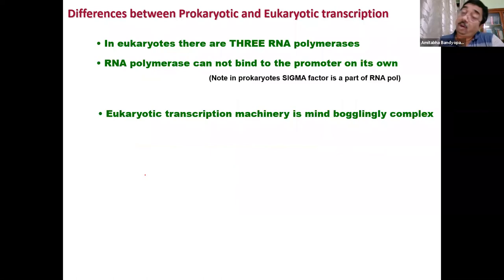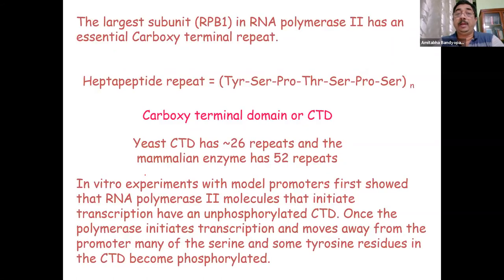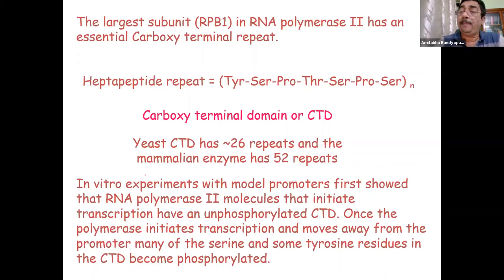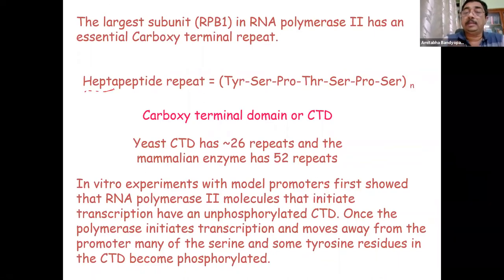There is a special feature: the largest subunit of RNA pol 2, RPB1, has a C-terminal domain with a unique sequence called a heptad repeat — heptad meaning seven amino acids. The sequence is: tyrosine, serine, proline, threonine, serine, proline, serine — and all of these can be phosphorylated.